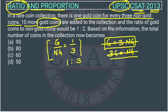10 more gold coins are added. So suppose we are assuming one variable k. If gold coins and non-gold coins is 1 is to 3, then it will become x or 3x. So total coin kitna hoi, total coin is 4x - 3x plus x is equal to 4x.